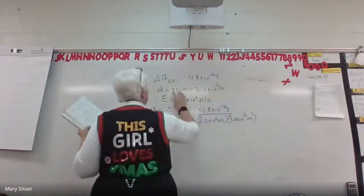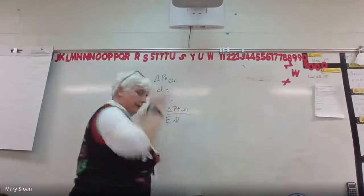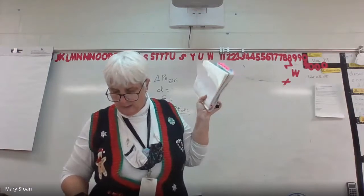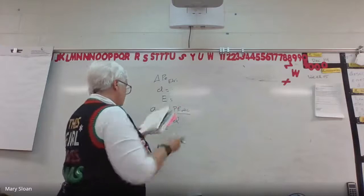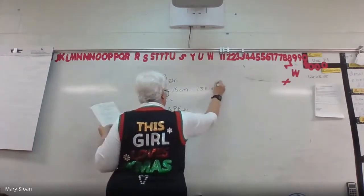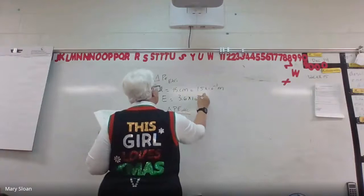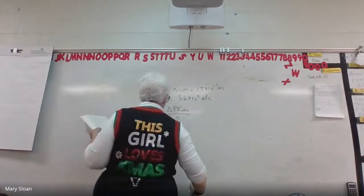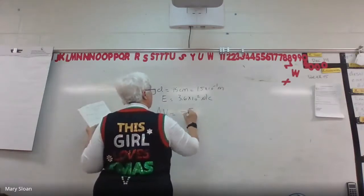I'm going to erase the variables we have and see if we can use this formula or if we need to change it. Number 2 says: two charged plates separated by 15 centimeters create a uniform electrical field of 360 — what is the potential difference between those two plates? My D — they're 15 centimeters apart — is 1.5 times 10 to the negative 1 meters. E is 3.6 times 10 to the 2. We're looking for the change in voltage, which is the change in V, equal to negative E times D.